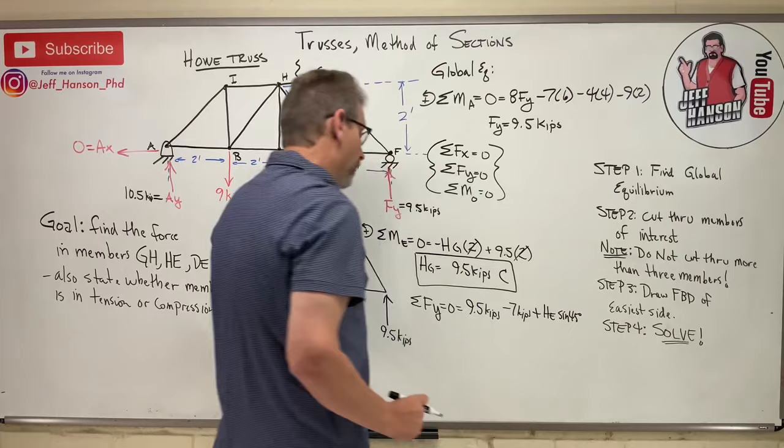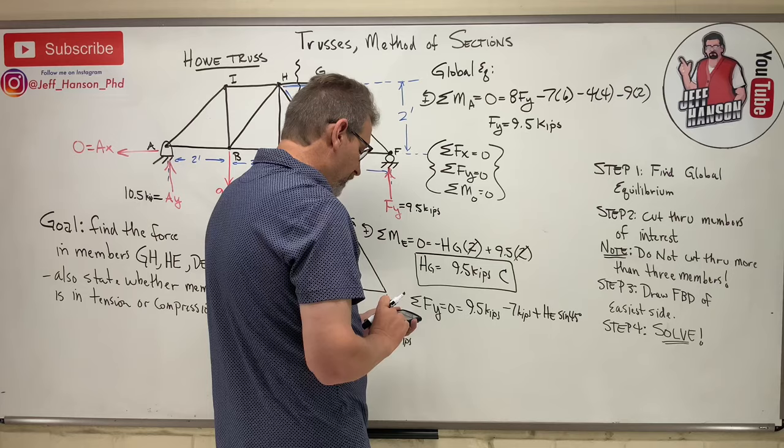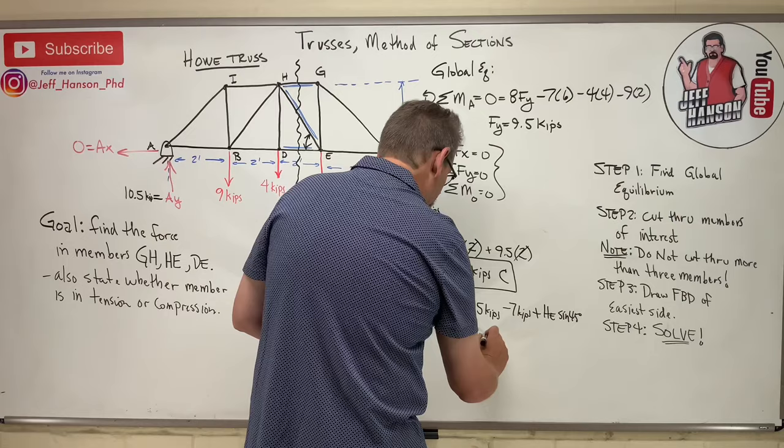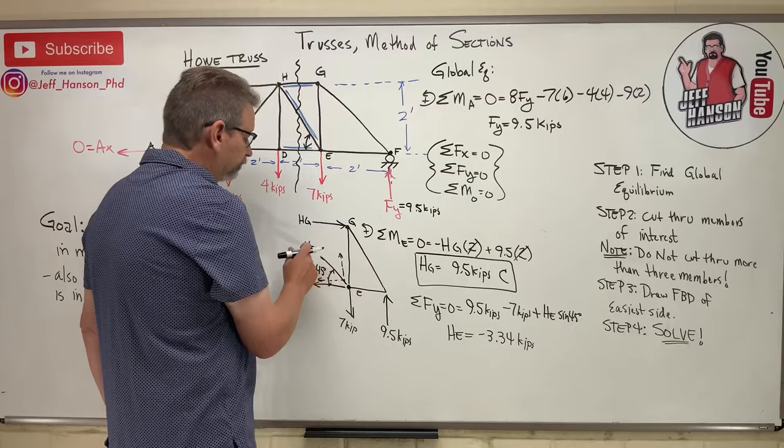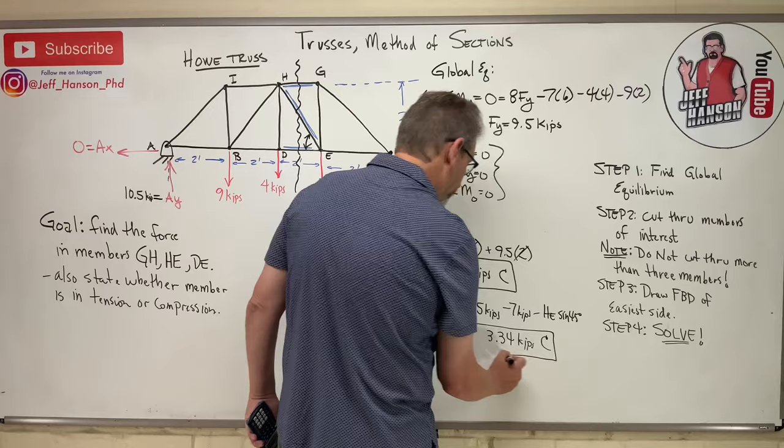Looks like my direction is going to be backwards again. So move the 7 to the other side, 7 minus 9.5 is negative 2.5 divided by 0.707. So H-E is equal to negative 3.34 kips. I guessed him in tension, guess what? He's really in compression. I'm just going to change that to a negative. Compression.